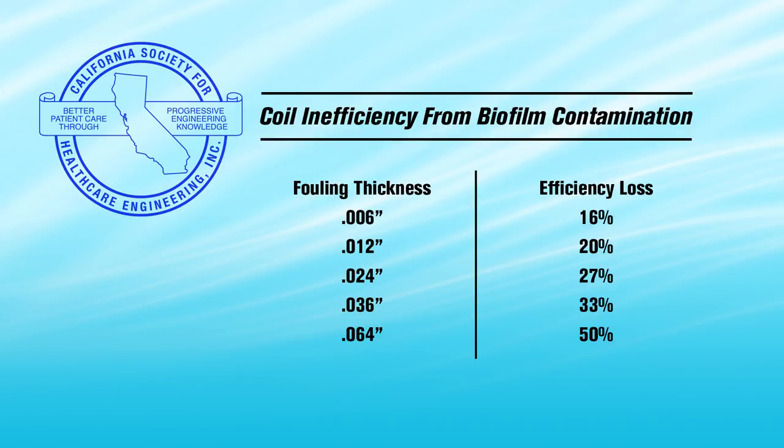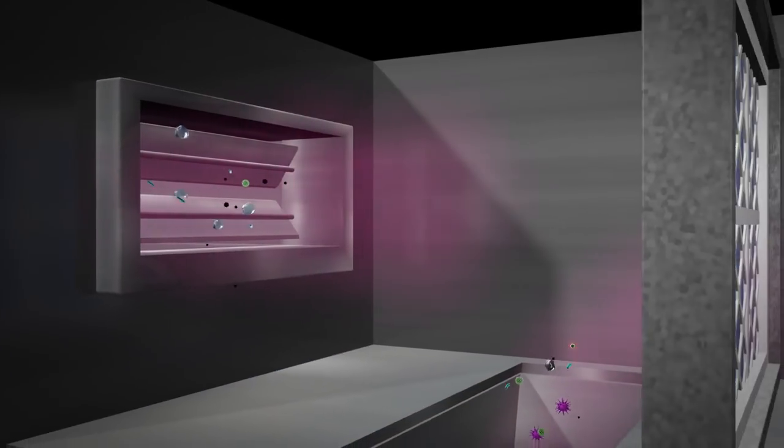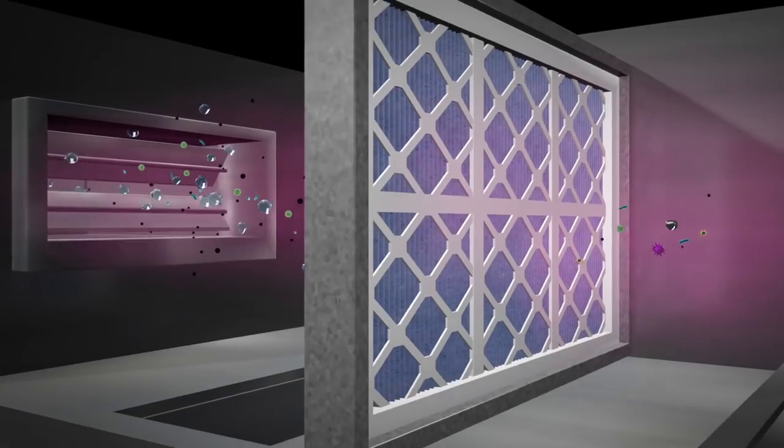According to the California Society for Healthcare Engineering, it only requires 1.5mm fouling on the coil fins, 0.006 of an inch, to reduce the coil's efficiency by 16%. When particulates pass through the primary filters and settle on the coil, we should expect the condensate to wash them away.